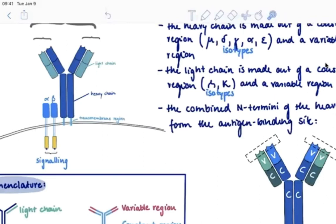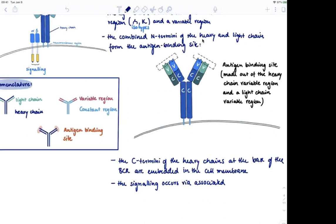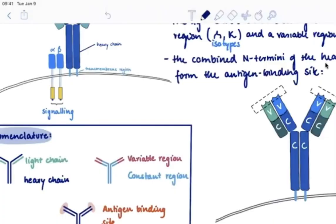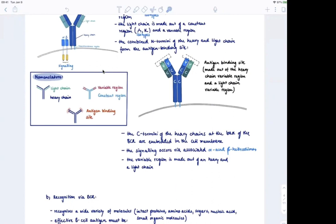So let's write this down. Signaling occurs via associated alpha-beta heterodimer. So it's just this alpha chain and a beta chain, and it forms a dimer. And because it's not the same, it's not two alpha chains, it's an alpha and a beta, we call it a heterodimer.